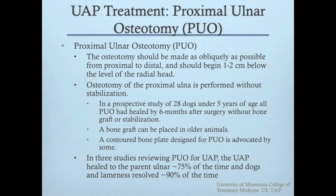Proximal ulnar osteotomy has been reported as a treatment for an ununited anconeal process as well as a fragmented medial coronoid process. The osteotomy begins approximately one to two centimeters below the level of the radial head, and the cut is made as obliquely as possible in a proximal to distal direction. Proximal ulnar osteotomy can be performed without additional stabilization, though in older dogs it is reasonable to consider placement of a bone graft at the osteotomy site. A review of three retrospective studies found a UAP healing rate of approximately 75%, and lameness resolved in approximately 90% of cases.